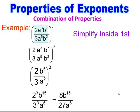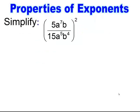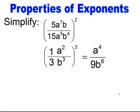So simplify inside first before you take the power on the outside. Pause and try. I want to simplify inside first — drawing my line. 5 over 15 reduces to 1 third. Then a to the 7th over a to the 5th simplifies: subtract, stays on top — I get a squared. And b over b to the 4th, higher exponent on the bottom: I subtract and leave it on the bottom. Taking that power on the outside and giving it to everything inside, I end up getting a to the 4th on top all over 9b to the 6th.